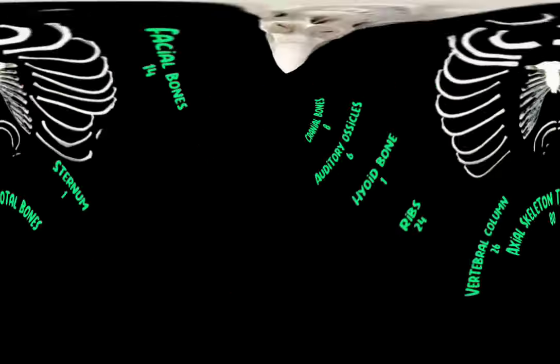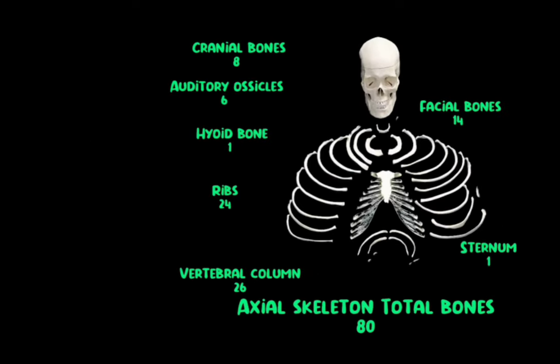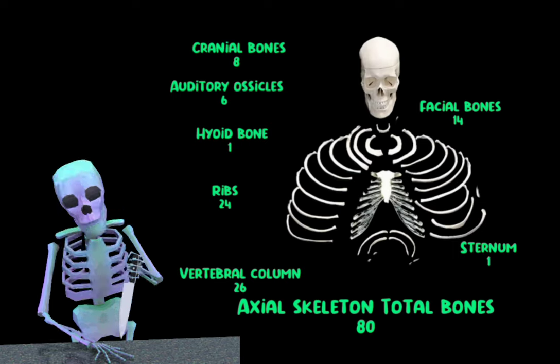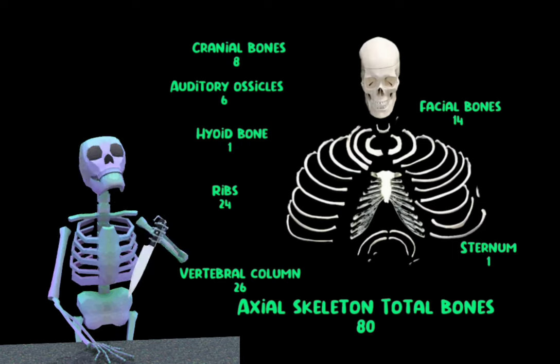When you combine all the bones we discussed, the total number of bones in the axial skeleton comes out as 80.